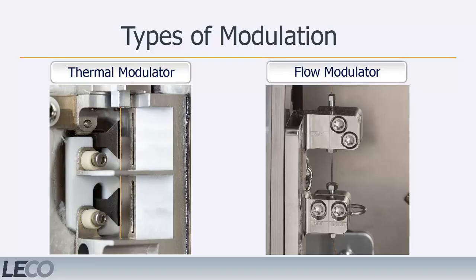Currently, GC×GC modulators can accomplish effluent partitioning through two separate and distinct methods: thermal and flow modulation. Both types of modulation allow users to run GC×GC samples, but have advantages and drawbacks that depend heavily on analysis needs. LECO has developed both a thermal and a flow modulator to fit these analytical challenges. The following sections will discuss the process of modulation with each type of modulator and the LECO models equipped with that modulator.